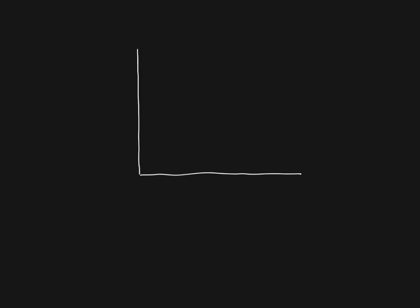Let's say we go out and we measure two variables. We could get data on ice cream sales and we could get data on snake bites. So for any given day of the year, how many times did people buy ice cream in a particular city — let's say Phoenix, Arizona — and how many times in Phoenix, Arizona on that day did people get bitten by snakes? If we were to start to plot data on this graph, we would probably find quite a strong relationship. It would not be perfect, but we might expect to see a very nice correlation between them. If we were to put a line through that, it would look something like this.